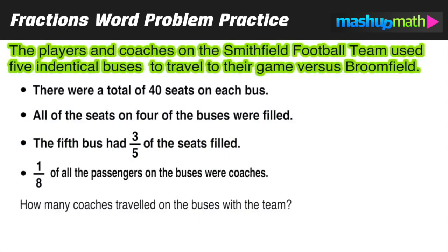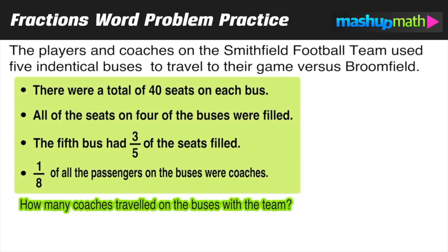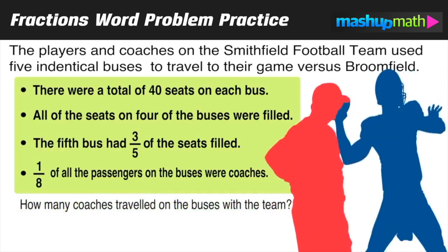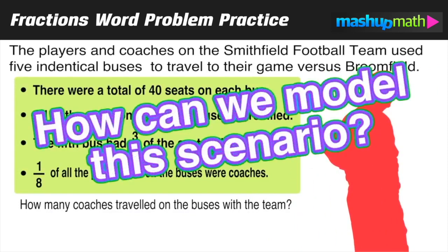On this problem it's kind of wordy — there's a lot going on — but we get to apply our modeling skills to draw a diagram so that we can find the solution. The players and coaches on the Smithfield football team used five identical buses to travel to their game versus Broomfield. We have four bullet points of information, and the question is asking us to find out how many coaches traveled on the buses with the football team.